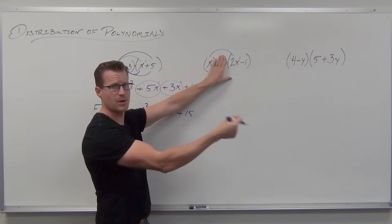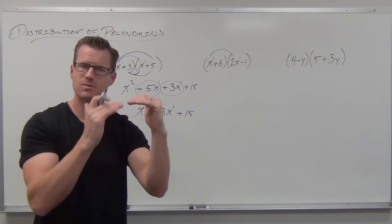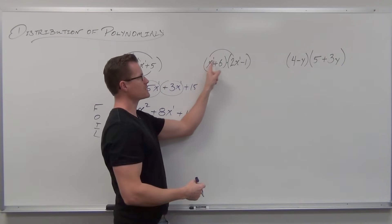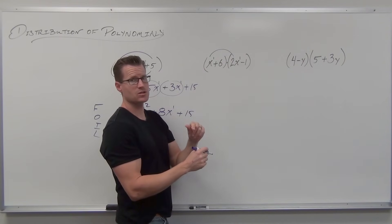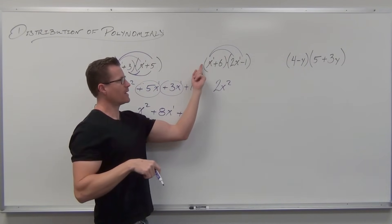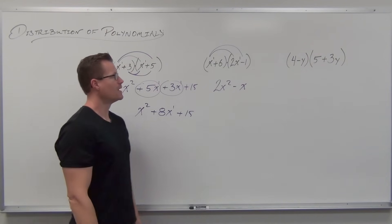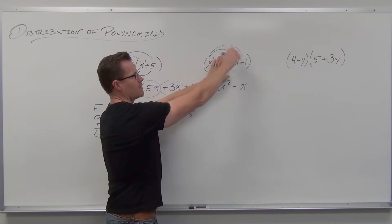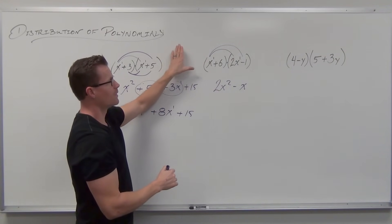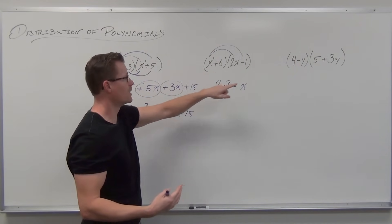Distribution takes every term in one polynomial and multiplies it onto every term in the other polynomial, so our exponent rules are going to apply. I'm going to start with my first term and multiply it through every single term in the other polynomial — basically distributing a monomial times a polynomial. Since we're multiplying, I should be adding exponents. So 1 times 2 gives me 2, and x times x gives me x squared. Then x to the first times negative one — one times negative one is negative one — and with no other x to combine, I get negative 1x.